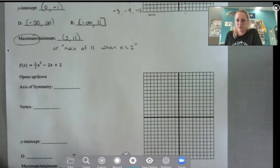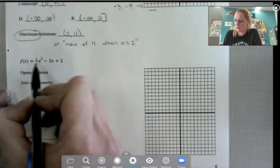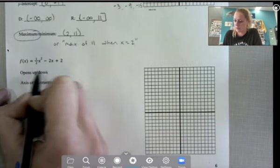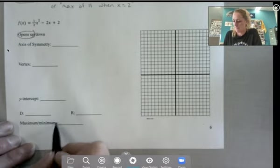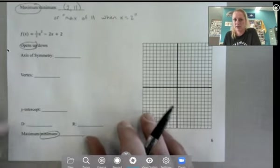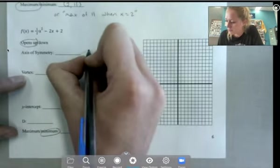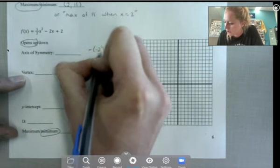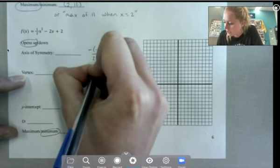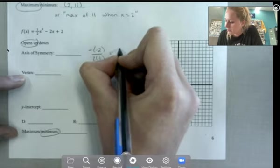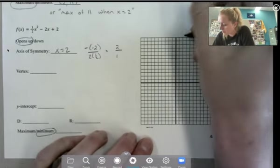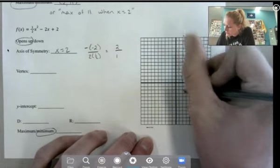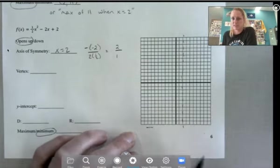All right. Let's try this one. This one, my a value is positive. So it's going to open up, which means it has a minimum. Axis of symmetry, negative b over 2 times a. So we get positive 2 over 1, which is 2. So this one has actually the same one as up above. So it's got to be centered on that axis of symmetry.